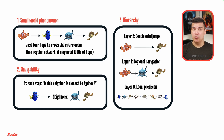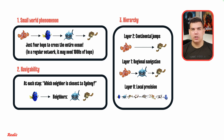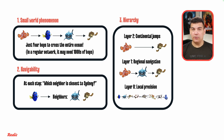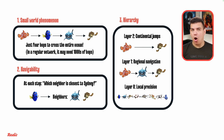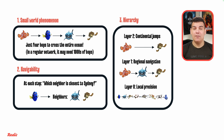HNSW's foundation rests on three key principles. First, the small world phenomenon: just like Marlin reached Sydney through only a few key connections — Dory connected to Bruce, Bruce connected to Crush — any two points in the data can be connected through a small number of hops. Second, navigability: at each step you can greedily move closer to your target, just like Marlin always moved toward Sydney. Third, hierarchy: having multiple layers means you can search efficiently whether you have a hundred fish or a billion.